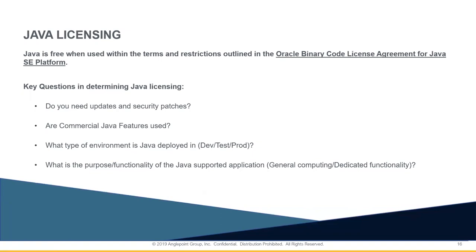As we walk through the determining Java licensing section, we're going to look at four key questions. These key questions highlight the latest Oracle Java SE changes and the major components of the BCLA. Rather than walking you through the very heavy language in the BCLA, we're going to step through a few questions to shed light on what the Binary Code License Agreement is trying to depict, as well as the new changes to the Java SE policy.